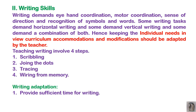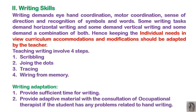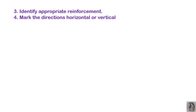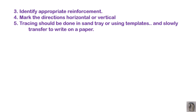For writing adaptation, provide sufficient time for writing. Provide adapted materials in consultation with an occupational therapist or others involved in the child's development. Identify proper reinforcement and mark the direction — horizontal or vertical — when the child is writing. Tracing should be done in a sand tray or using templates, and then slowly transfer to white paper. Every task has its own adaptation — these are not steps but task-based approaches.